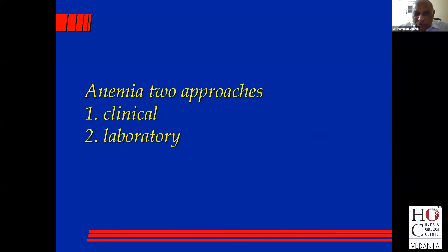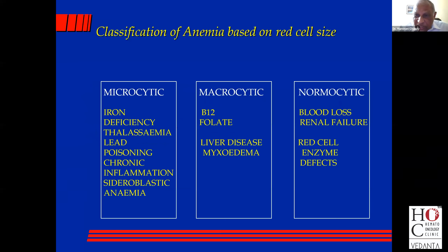Clinically, there are two approaches to anemia. One is the clinical approach and the other is the laboratory approach. I'd start with the laboratory approach, which is basically based on red cell size. If you have small red cells, it's microcytic. If you have large red cells, it's macrocytic. And if the red cell size is not disturbed, it's normocytic.